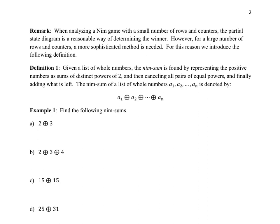So to come again with that comment, when analyzing the game of Nim with a small number of rows and counters, the partial state diagram is a somewhat reasonable way of dealing with determining the winner. However, for a large number of rows and counters, we need something a little bit more sophisticated. So that's where this following definition is leading us to. So if we're given a list of whole numbers, we can define something called the nim-sum. So this might be brand new to you. This is a new way of combining numbers, it's a new operation.